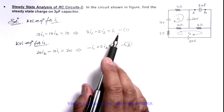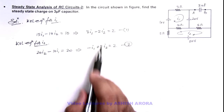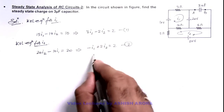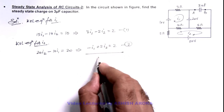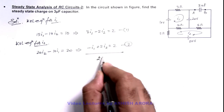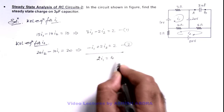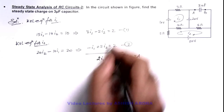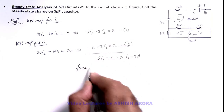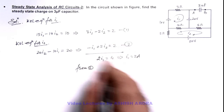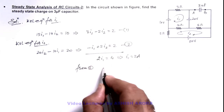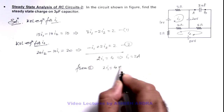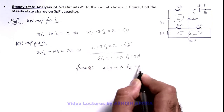From these two equations, on simplifying, if we add them we get 2I1 = 4, which implies I1 = 2 ampere. Substituting the value of I1 as 2 ampere into equation 2 gives 2I2 = 4, which implies I2 = 2 ampere.